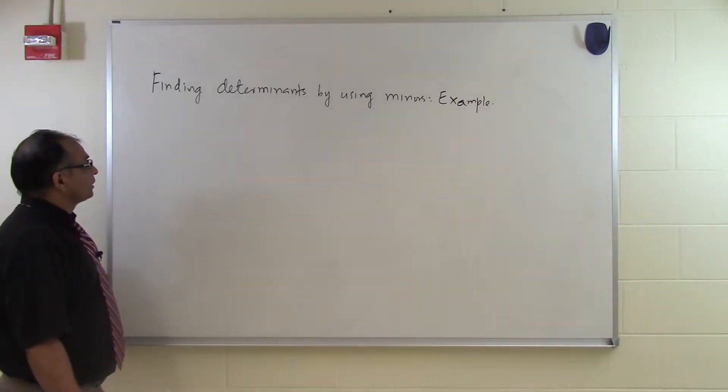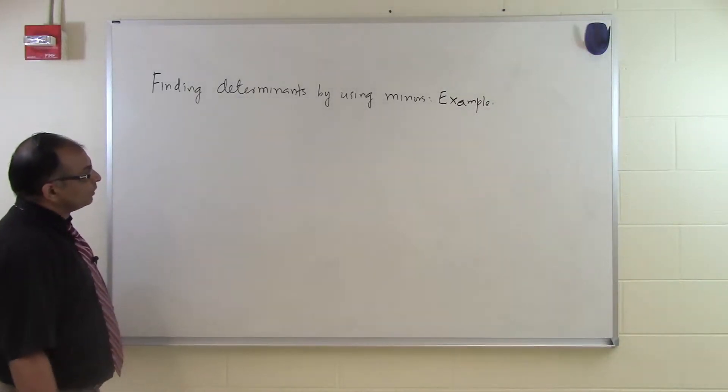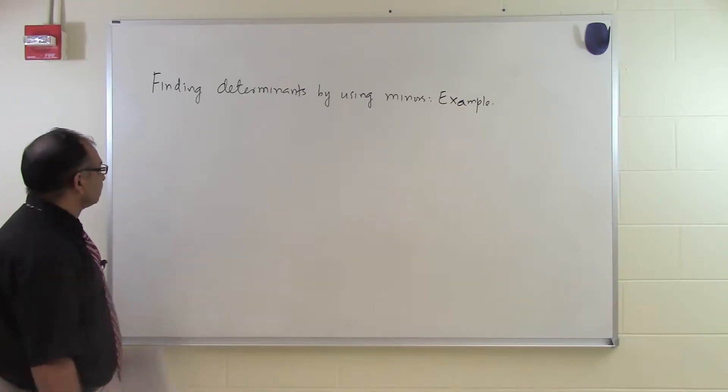In this segment we'll look at an example of how to find a determinant of a square matrix by using minors.